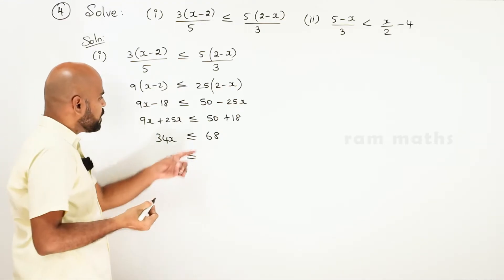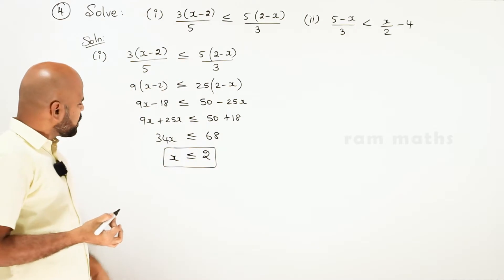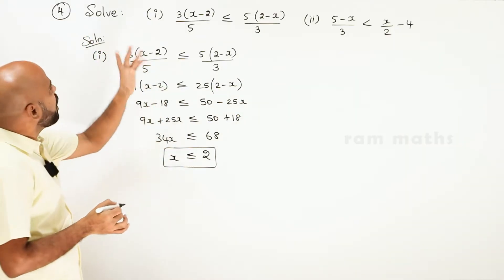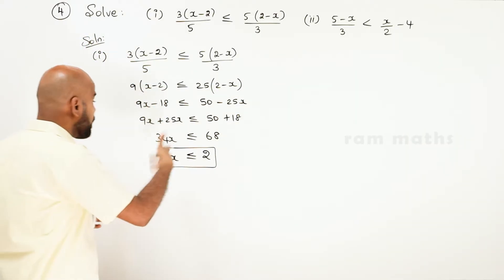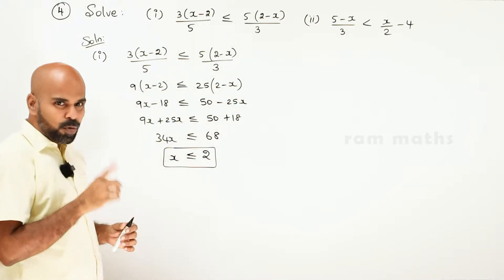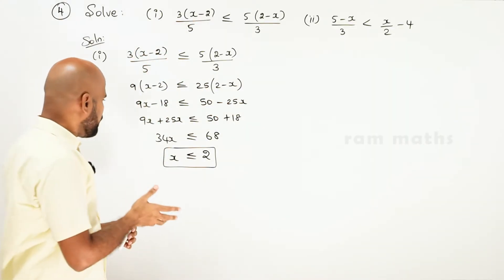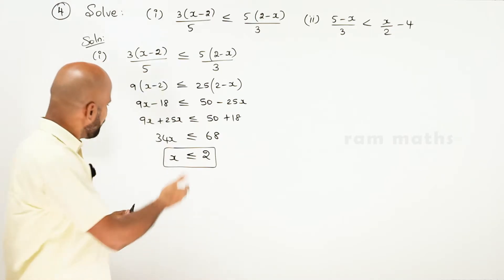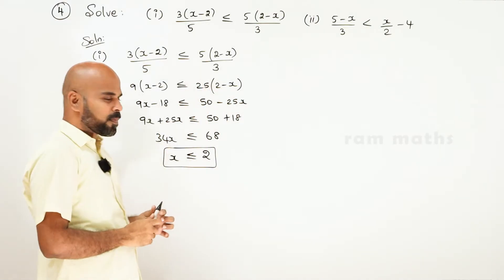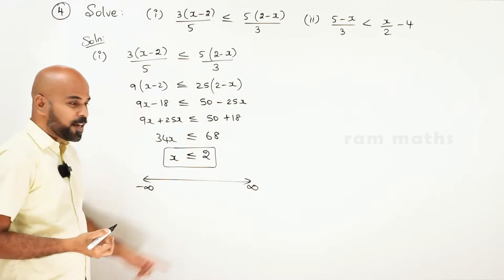x less than or equal to 68 by 34, which equals 2. Values of x: 1 minus x equals 1 minus, so we can proceed with real numbers. Real number is the number line, from minus infinity to plus infinity.